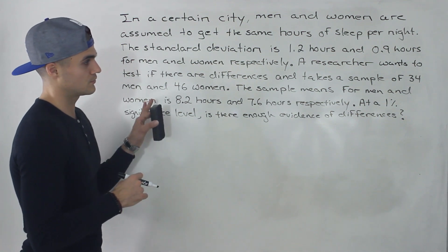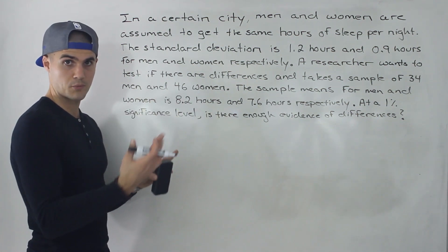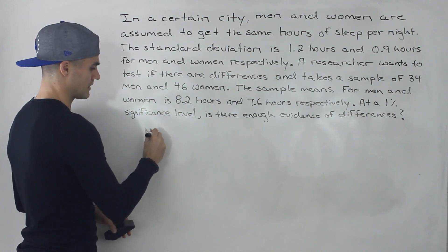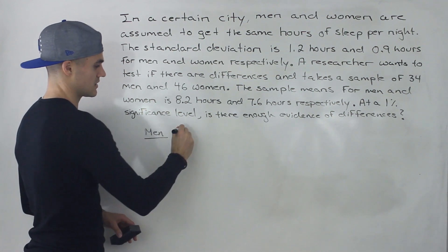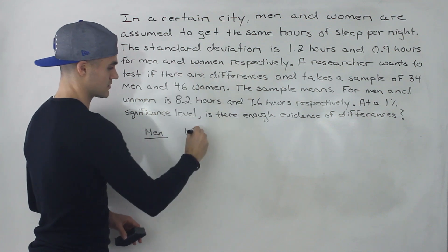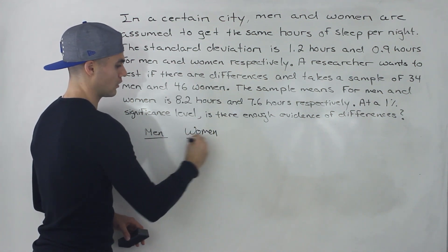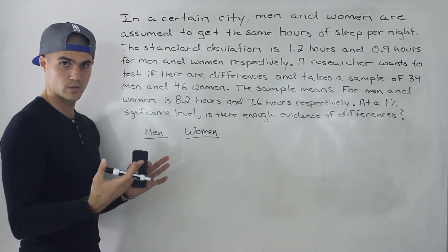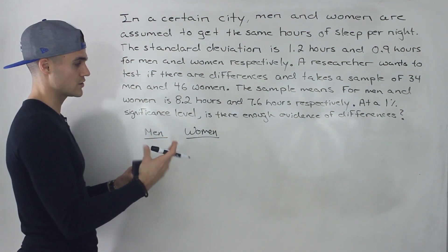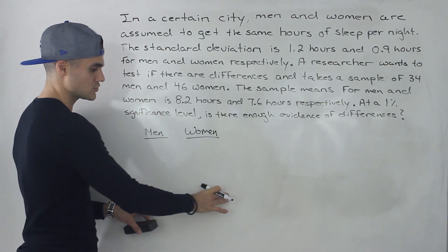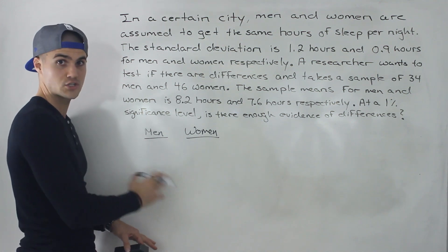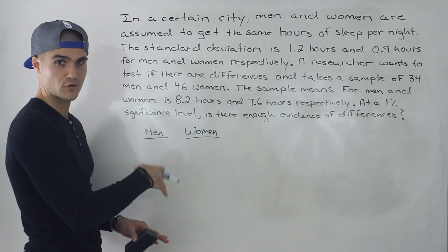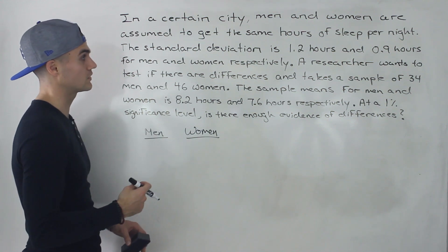Reading this question, we're dealing with two populations — basically all of the men in this certain city and all of the women in the city. What I like to do with these two-population questions is write out the two populations and all the given information in columns, so it's easier to refer to when doing the actual calculations.